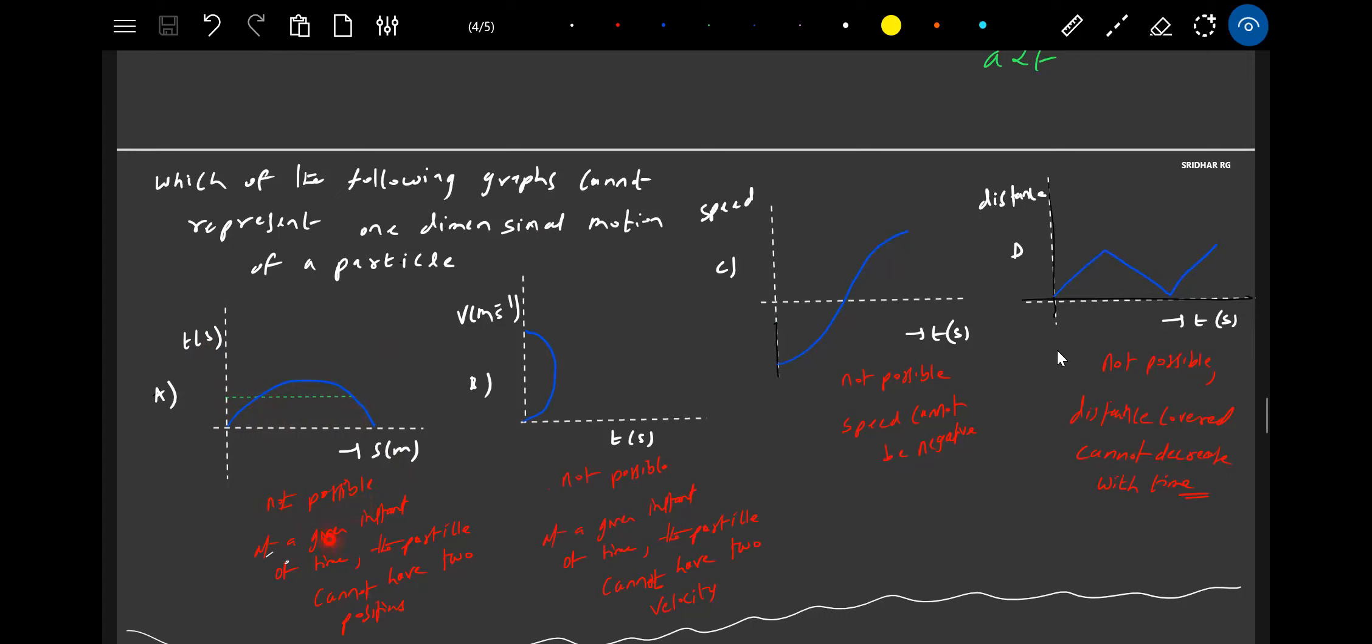I'm writing not possible. At a given instant of time, the particle cannot have two positions. That's what's here. How can it have two positions? How can it be at 10 centimeters and 20 centimeters? So this is ruled out.